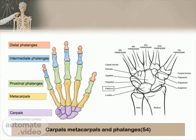The carpal bones are eight irregularly shaped bones located in the wrist region. They connect the distal aspects of the long bones of the forearm — radius and ulna — to the proximal aspects of the metacarpal bones, and are organized in two rows: proximal and distal. A metacarpus is a group of five bones of the hand between the phalanges and the carpus. Although the metacarpal bones are small, they are classified as long bones. Each metacarpal bone consists of a shaft, distal head, and a wide proximal base.